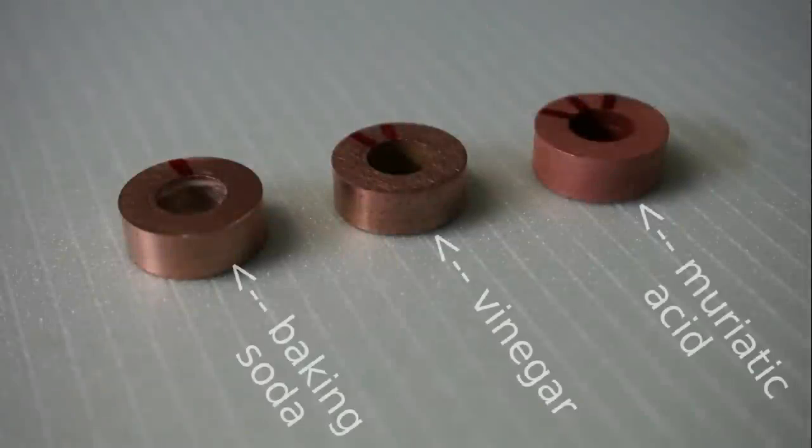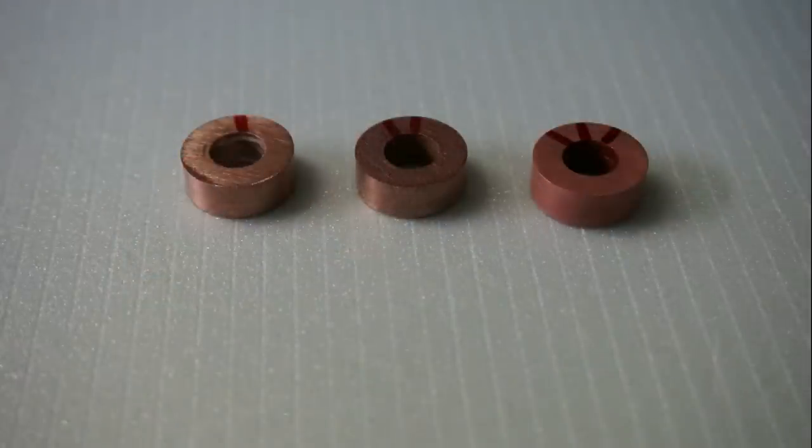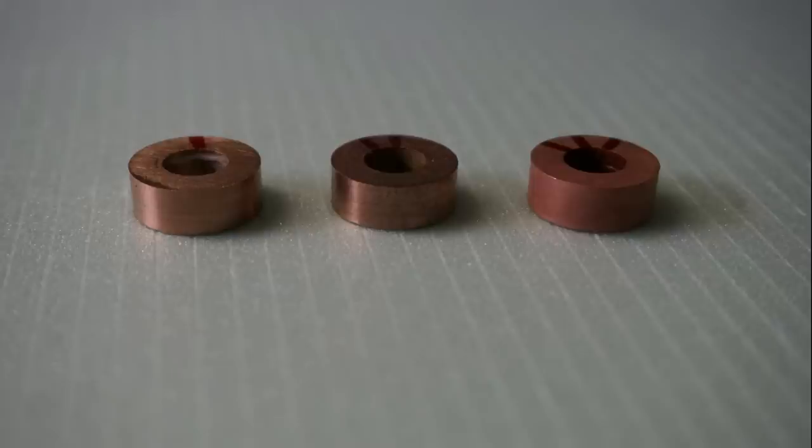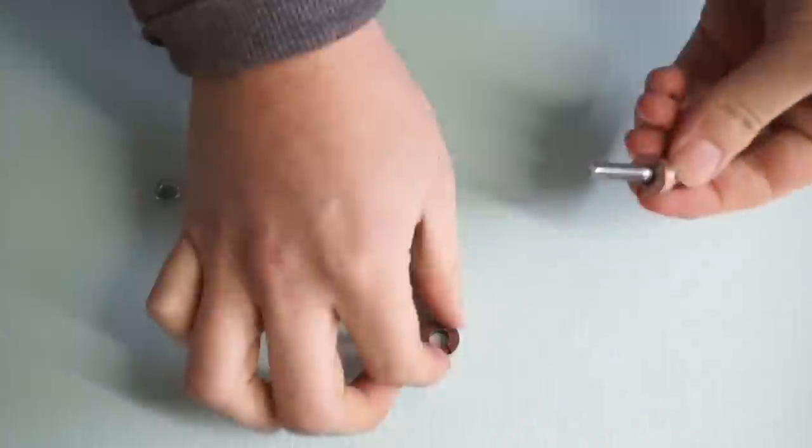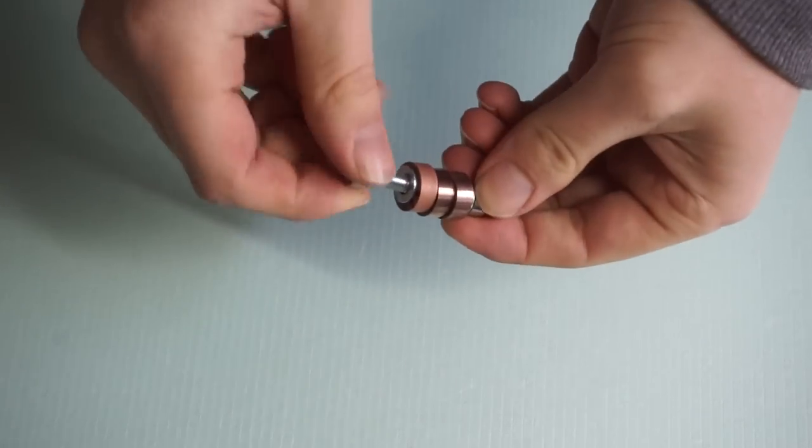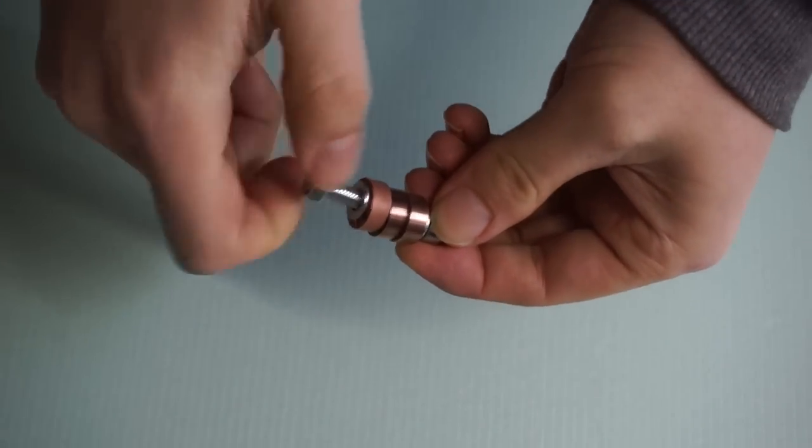If you compare the results of the three methods side by side you can clearly see the differences in color and surface texture. If you're shooting for shiny surface I would go with the baking soda method. I guess with closer control of the voltage and the current you could get similar results with the muriatic acid as well. If you need more durability and a faster process the muriatic acid is the way to go in my opinion.